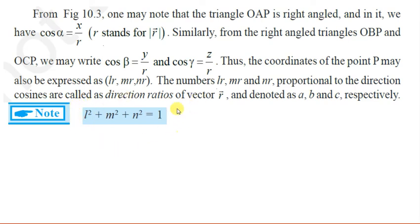So we have this very important relationship: l square plus m square plus n square equal to 1. This is the relationship between the direction cosines of any vector. That's all for today. Thank you.